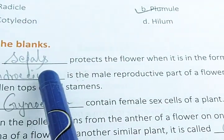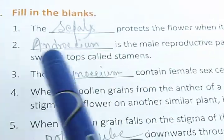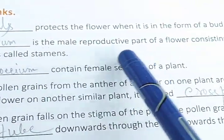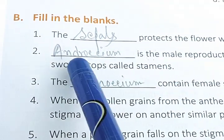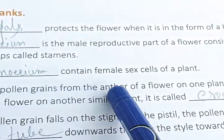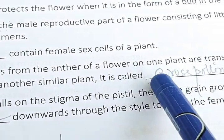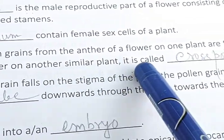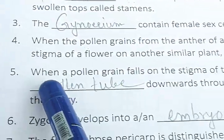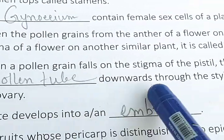Fill in the blanks. The blank protects the flower when it is in the form of a bud in the initial stage — answer: sepals. Blank is the male reproductive part of a flower consisting of a little stalk with a swollen top called stamen — answer: androecium. The blank contains the female sex cell of the plant — answer: gynoecium. When pollen grains from the anther of a flower on one plant are transferred to the stigma of another similar plant, it is called cross pollination. When pollen grains fall on the stigma of the pistil, the pollen grains grow downward through the style towards the female gametes — that is the pollen tube.